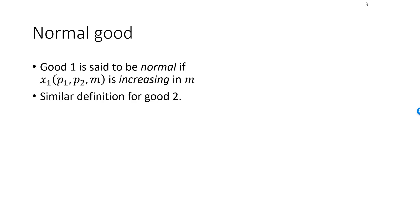If it is the case that the demand function for good 1 is increasing in income, then we say that good 1 is a normal good. We make a similar definition for good 2. Good 2 is normal if the consumer increases her consumption of good 2 when her income increases.